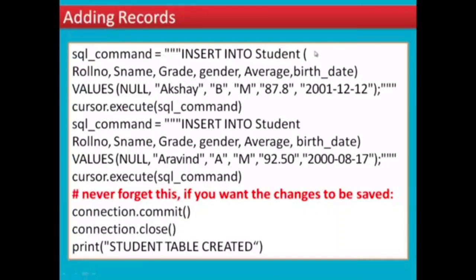Next, we use the VALUES keyword. The role number is null — null is 1 for the first entry. The student name is Akshay, grade is B, gender is M, average is 87.8, and the birthdate is also provided. This is the INSERT INTO syntax with the student table and field names.